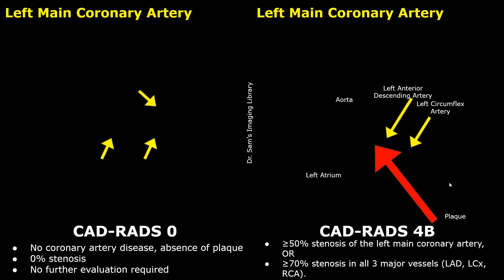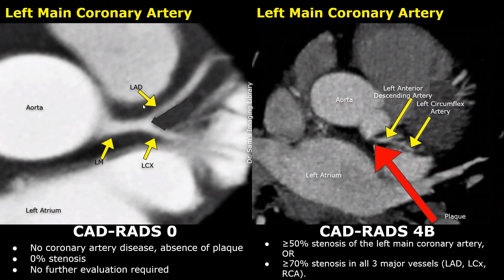These are axial images of the heart focusing on the left main coronary artery. In the normal image, there is no high or low density plaque present in the artery. No stenosis is present, and the enhancement is normal. In the image on the right, a non-calcified plaque is present in the left main coronary artery. The plaque pretty much involves the entire lumen. This case will be classified as CADRADS-4B.